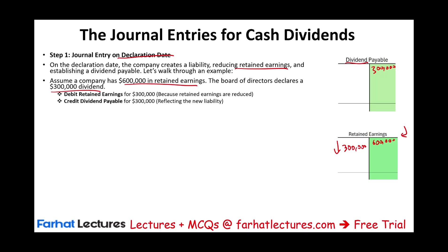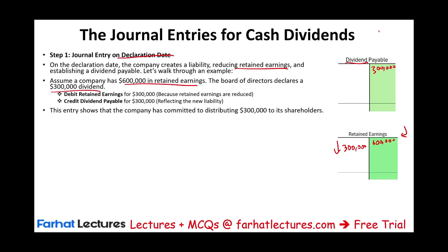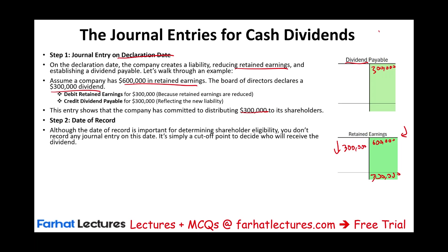In some textbooks, they may call this account 'dividend' and then close it later on, but we'll call it dividend payable, which is a liability. This entry shows that the company committed to distributing $300,000 — now they have an obligation, and they still have $300,000 in retained earnings. For the date of record, there is no journal entry. It's simply a cutoff point to decide who would receive the dividend.